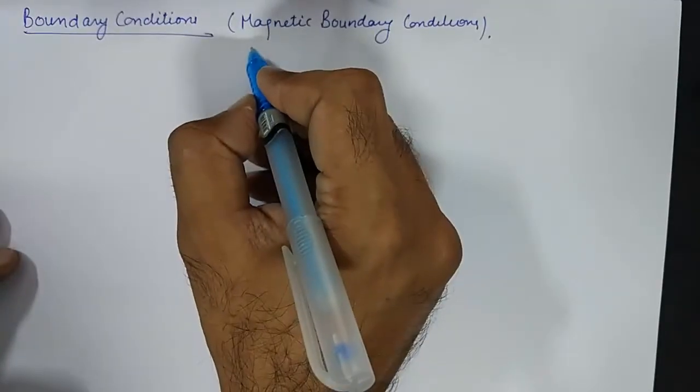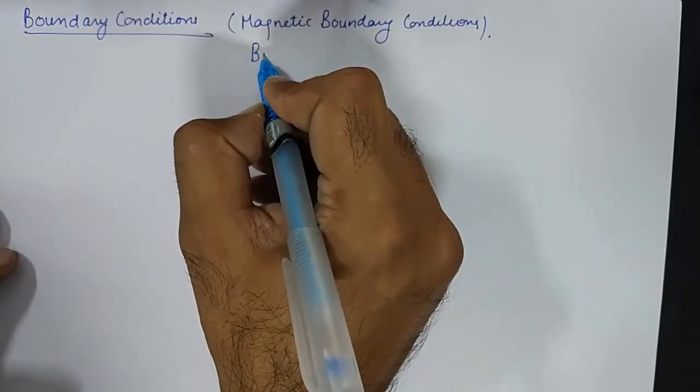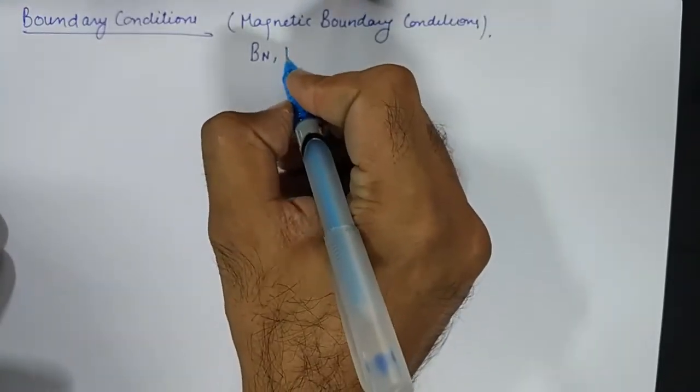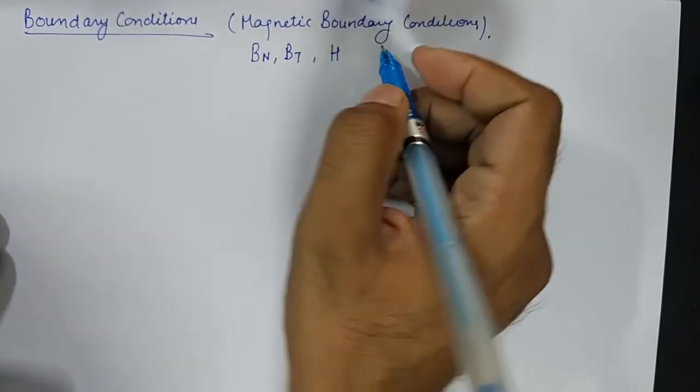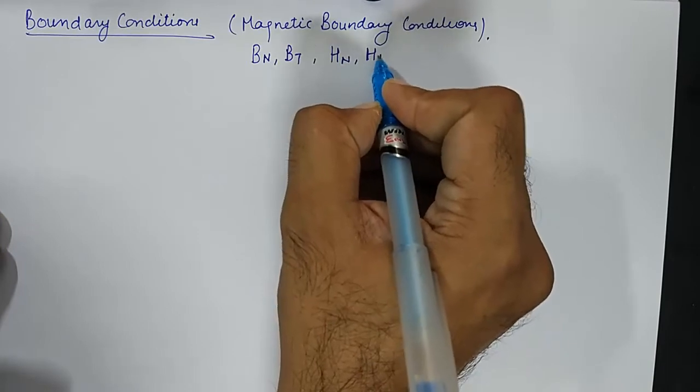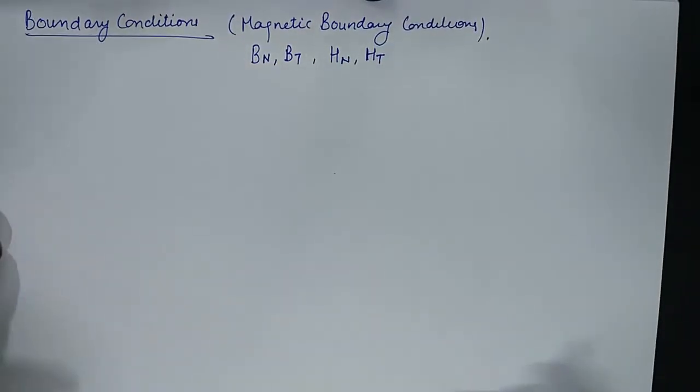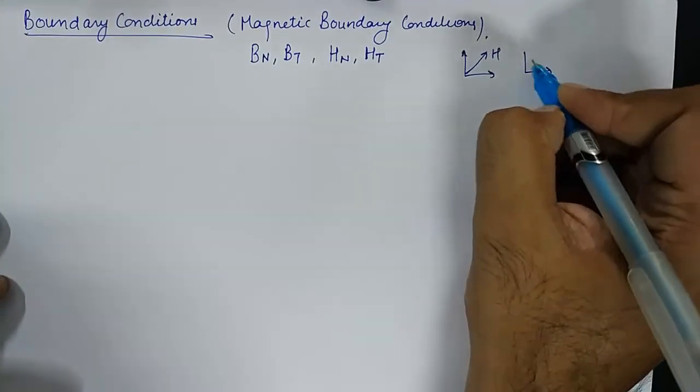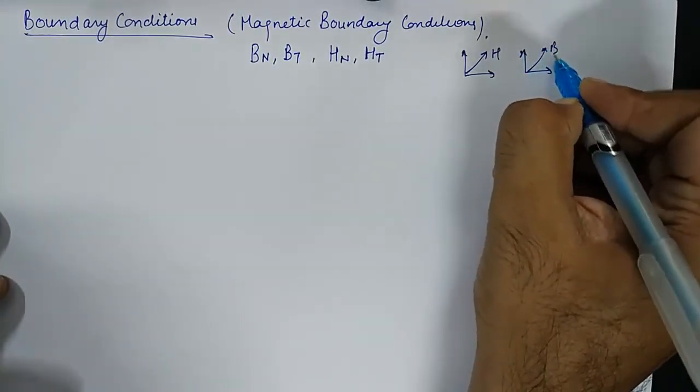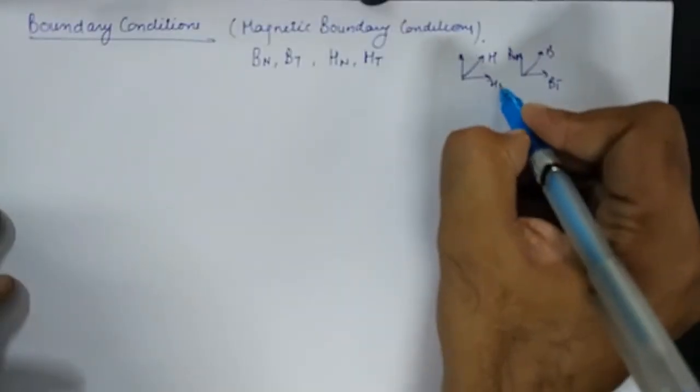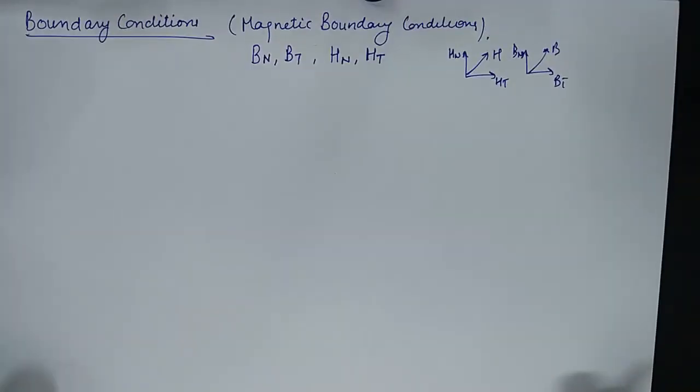Now we need to find B, which is magnetic flux density's normal component, B's tangential component, magnetic field intensity's normal component, and magnetic field intensity's tangential component. Once we are able to find that, we will be able to find resultant H and resultant B because they are sum of the tangential and normal components. That is what the idea behind is.